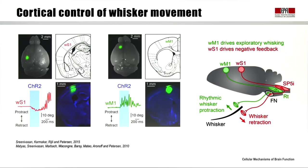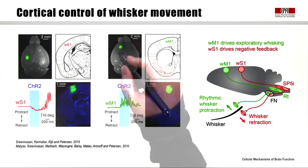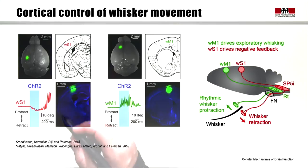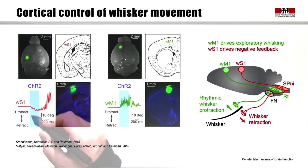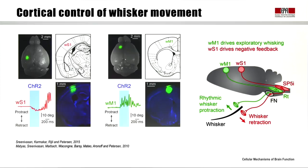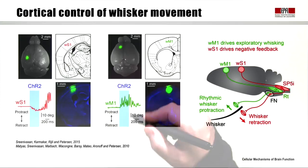We can test this hypothesis by putting channelrhodopsin in these two different brain areas. Here we've injected virus to express channelrhodopsin in the sensory cortex, and here in the motor cortex. While the animal was alive, we put blue light onto the sensory cortex and found that it generated whisker retraction. Stimulation of sensory cortex causes the whisker to move backwards, while stimulation of motor cortex causes the whisker to move forwards — but in a more complex rhythmic way, very much like the exploratory palpation we saw during the gap-crossing task.